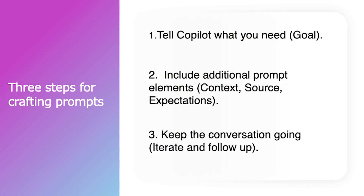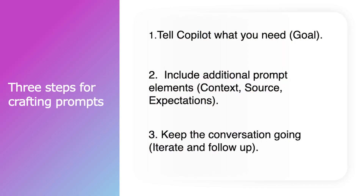The most important thing with AI is knowing what you need and how to ask for it. We've got three really good steps for crafting prompts. Number one: tell Copilot your goal — what you need. Number two: try to include an additional prompt element, such as context, a source, or expectation — so if you're teaching Year 5, you can ask for something appropriate for that age group. Number three: keep the conversation going — when you've got your information, keep it going, ask another question, and deep dive.